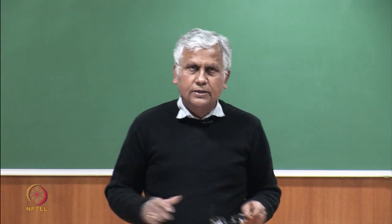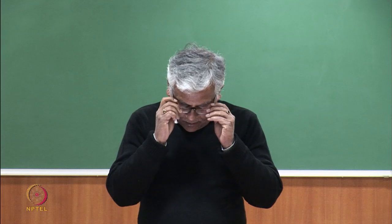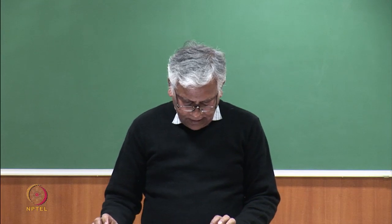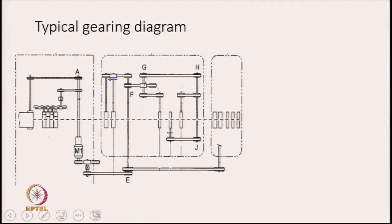We are going to discuss the gearing diagram of a lap former. The gearing diagram is shown. These 4 are the calendar rollers. Here is a gearing diagram of a typical machine.